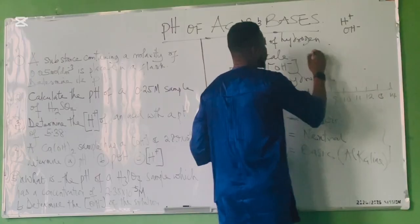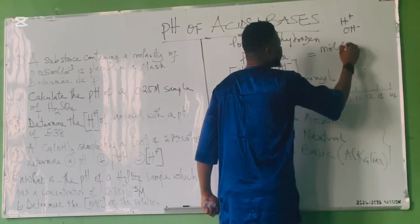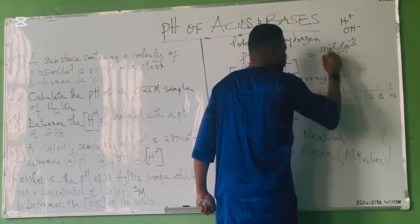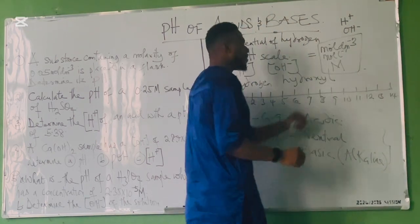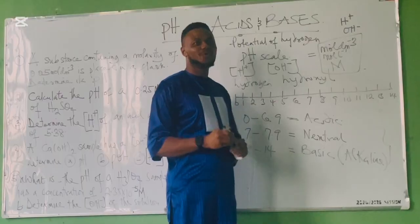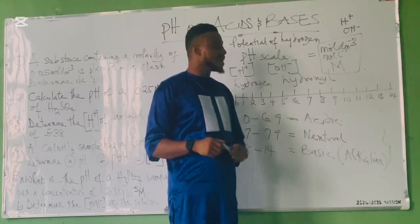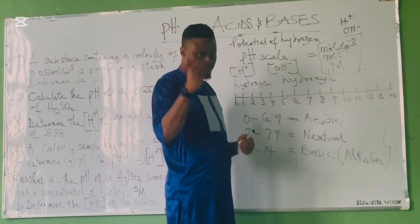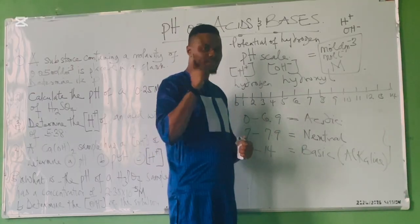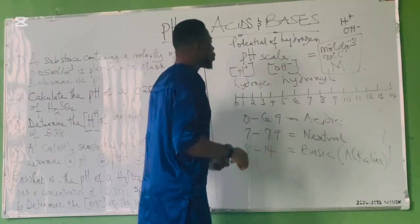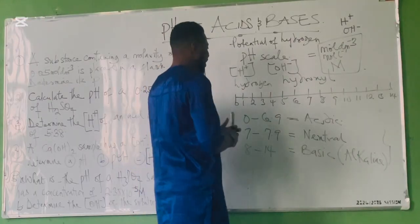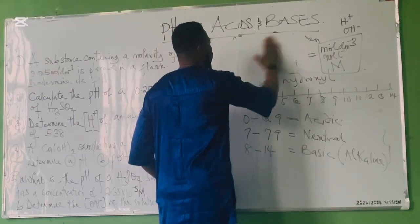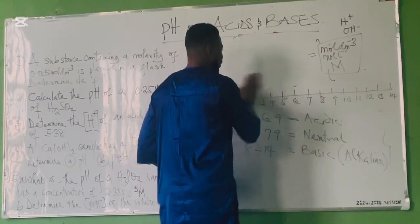The unit for concentration is mol per dm³, mol per litre, or molar — they all mean the same thing and are used interchangeably. The first formula is: pH = −log[H⁺]. Note that the hydrogen ion concentration is sometimes represented as H₃O⁺, which is called the hydronium ion. H⁺ and H₃O⁺ mean the same thing.